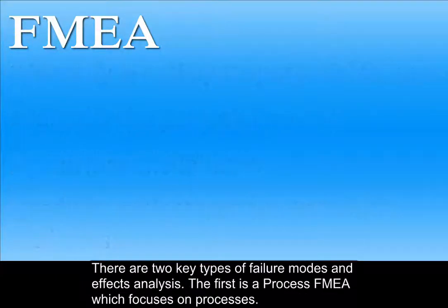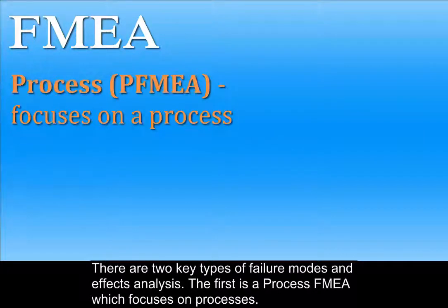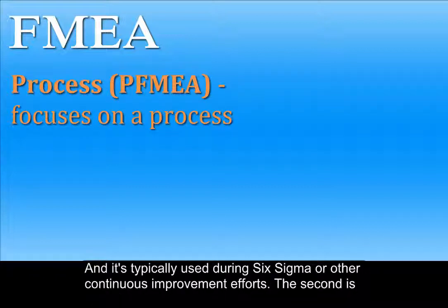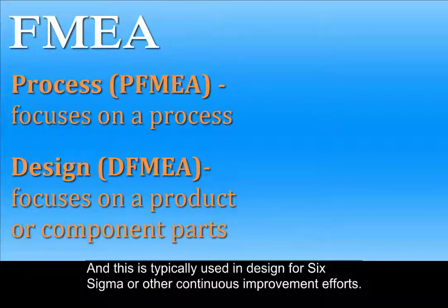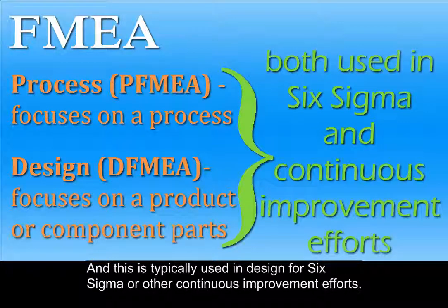There are two key types of failure modes and effects analysis. The first is the process FMEA, which focuses on processes and is typically used during Six Sigma or other continuous improvement efforts. The second is the design FMEA, which focuses on a product or component parts when you're designing or redesigning a new product or process, and this is typically used in design for Six Sigma or other continuous improvement efforts.